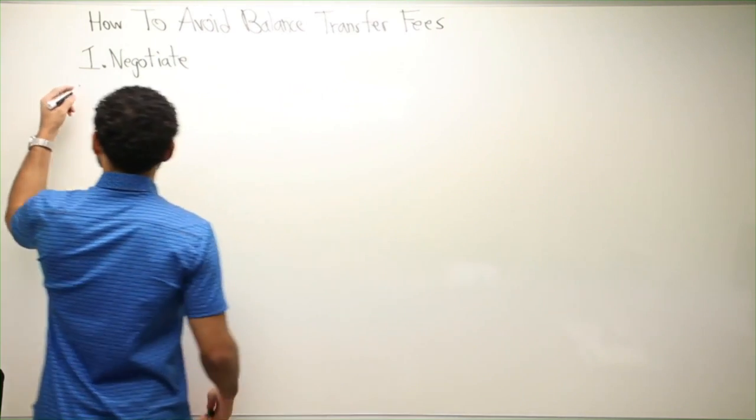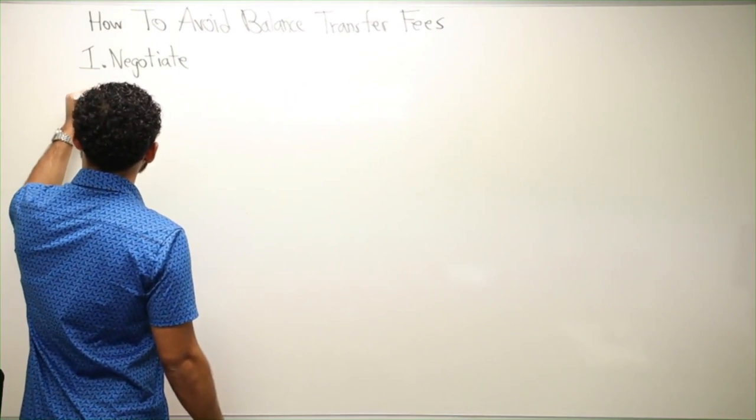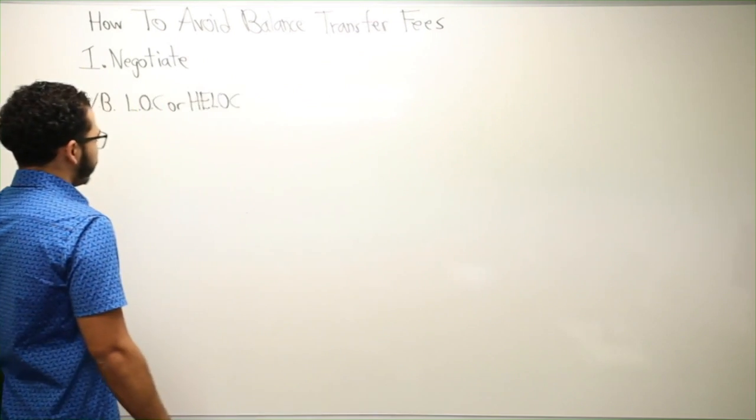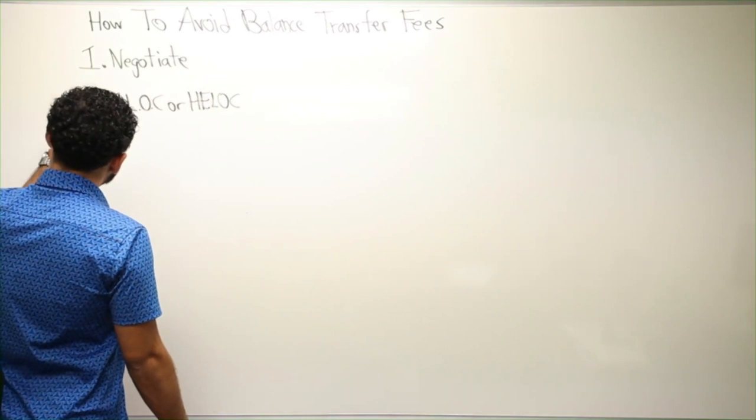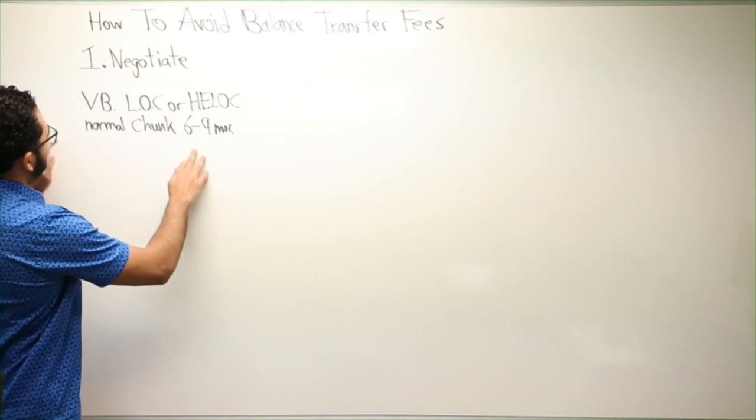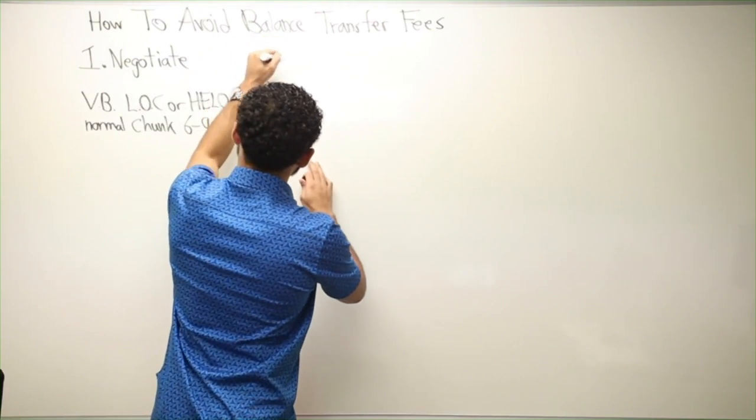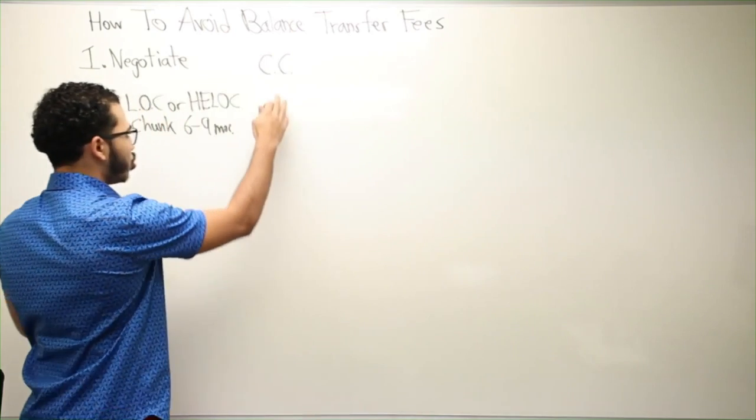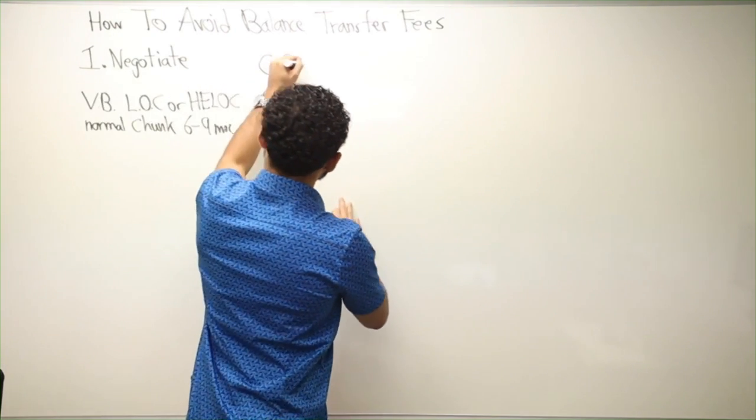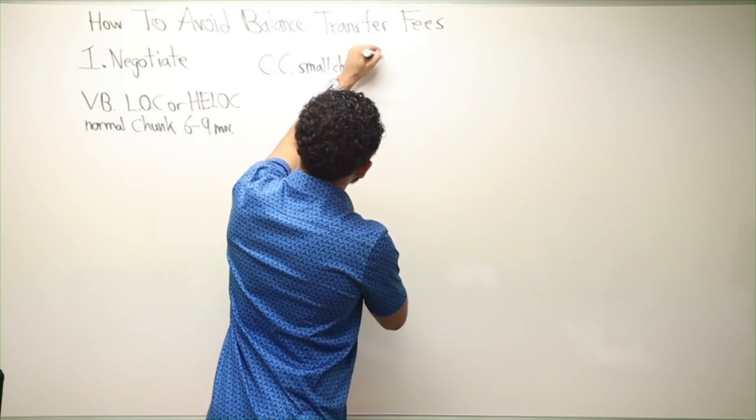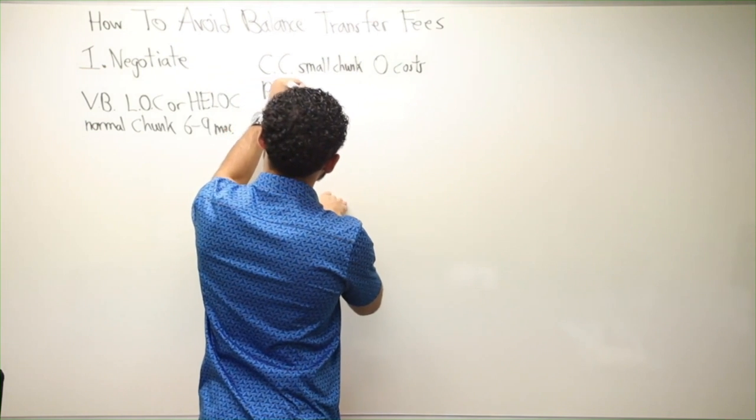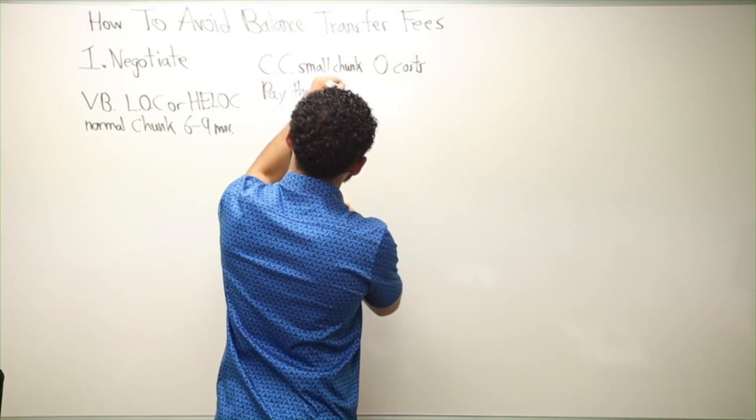You could be doing velocity banking with your line of credit or your HELOC and you do your normal chunk every six to nine months, let's say. But then with a credit card, you could structure another miniature small chunk at zero cost. Pay the minimum monthly payment on it.